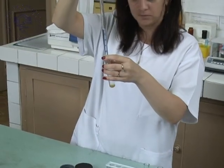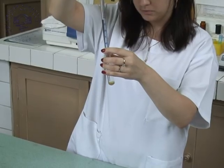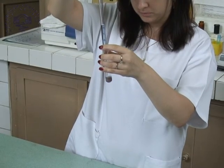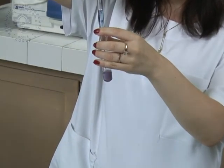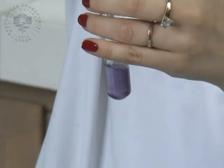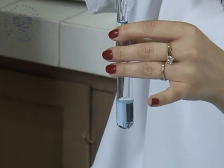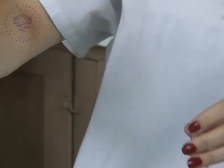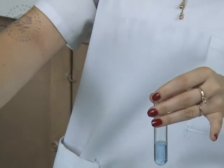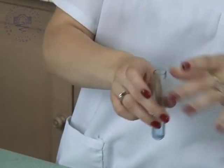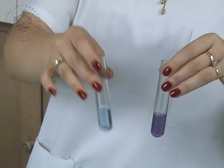After that, the biuret reagent containing sodium hydroxide and copper sulfate is added to each test tube. It is shaken and incubated for 30 minutes at room temperature, or for a minute at 100 degrees centigrade. The change of color from light blue to violet shows that the biuret reaction has occurred.